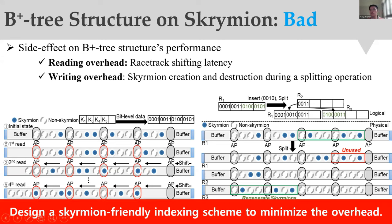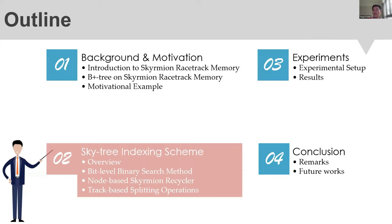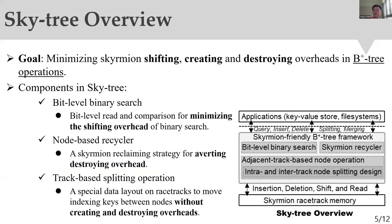This work is motivated by this observation, and we want to design a skyrmion-friendly indexing scheme to minimize overheads on skyrmion racetrack memory. We propose a SkyTree solution to minimize skyrmion shifting, creating, and destroying overheads in B+tree operations. To achieve our design goal, we include three components in SkyTree: a bit-level binary search method, a node-based recycler, and a track-based splitting operation.